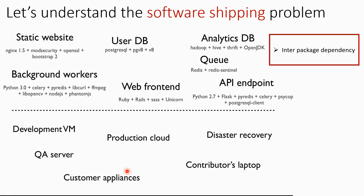We also have inter-package dependency, meaning one library is not compatible with some other component of the software. For example, the web UI can be developed on Ruby plus Rails plus Sass plus Unicorn. The static website may need an Nginx server plus libraries like OpenSSL, Bootstrap, and mod_security. The database VM requires PostgreSQL, and the background worker requires Python 3, PyRedis, and libcurl. Running these on a single machine can create inter-package conflicts — one package's version is not compatible with another's.